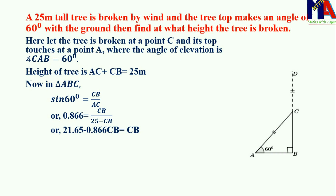By cross multiplication, 0.866 into 25 equals 21.65 equals 0.866 CB plus CB. By solving, 21.65 as it is, and this minus 0.866 will be plus 0.866.